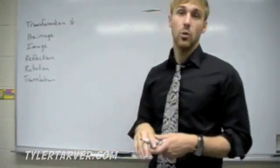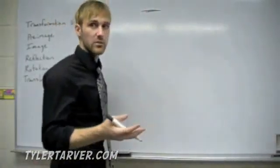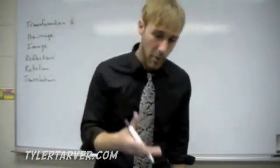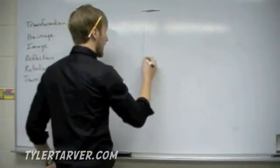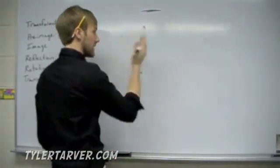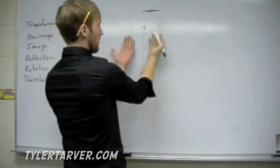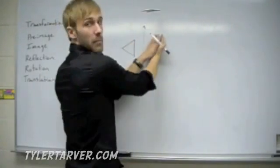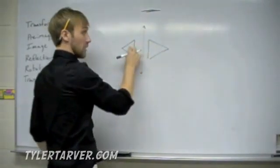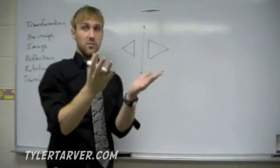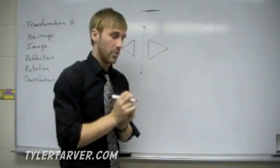Now let's look at types of transformations. The first type is called a reflection. A lot of you have heard this word — if you look in a pond or in a mirror, what you see back is the reflection. Say I've got a line here and I want to reflect this triangle across it. It's like folding a piece of paper — the shape folds over perfectly. That's a reflection, like in a mirror.